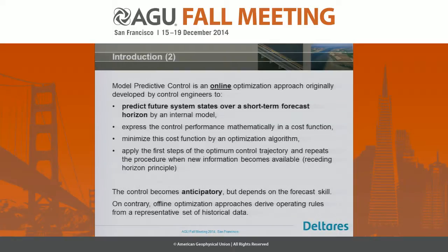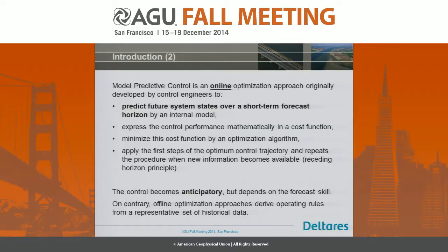This makes the control anticipatory, so we can look into the future and react on what we see. The main threat of this approach is that it depends on the forecast skill — if you have a bad forecast, you take a bad decision. This is different from an offline approach where you derive operating rules from a representative set of historical data, which doesn't use any forecast at all.